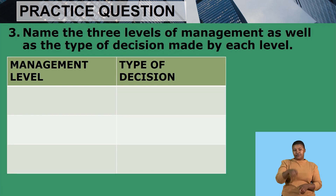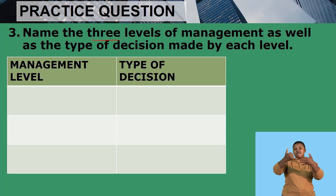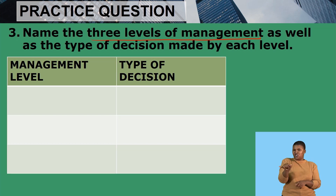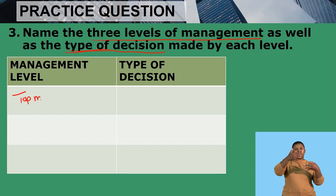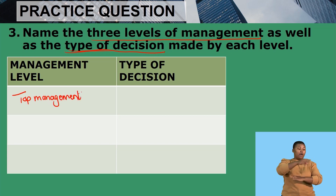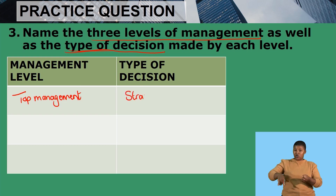Our third question asks: name the three levels of management as well as the type of decision made by each level. Our first level of management is top management, and top management develops the vision and goals of the business, so we say that they make strategic decisions — usually long-term.